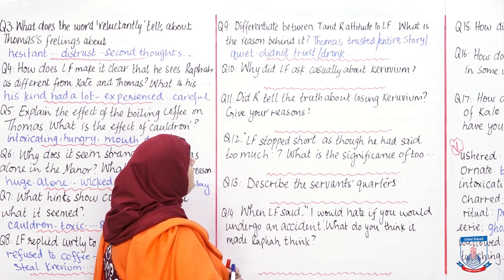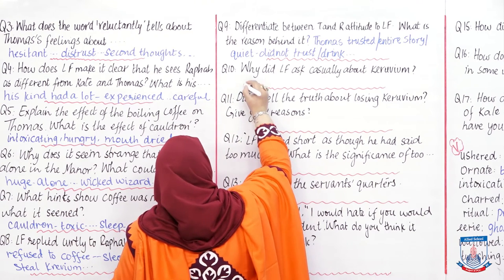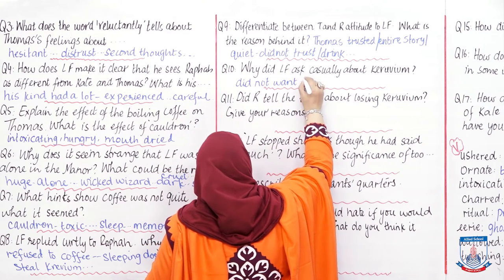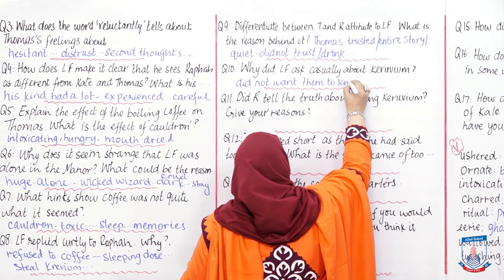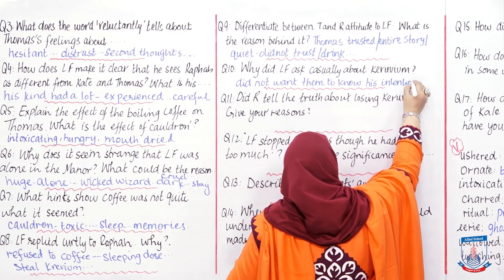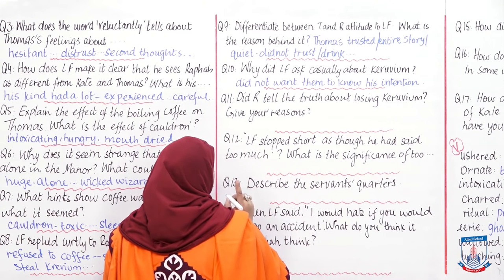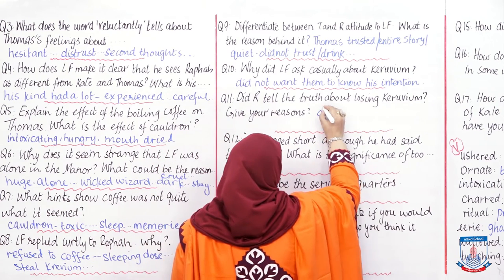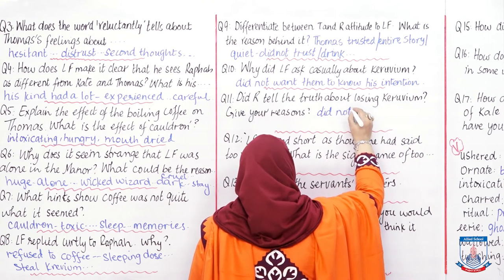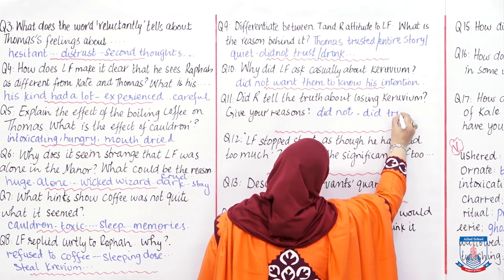Question: Why did Lord Fenister ask casually about Kerbium? Lord Fenister casually asked about Kerbium because he did not want them to know his real intention — he wanted to hide his feelings and his purpose. That is why he asked casually. Question: Did Rafa tell the truth about losing Kerbium? He did not. Rafa did not tell the truth — he said they had lost it, but he did not tell the truth because he did not trust Lord Fenister.